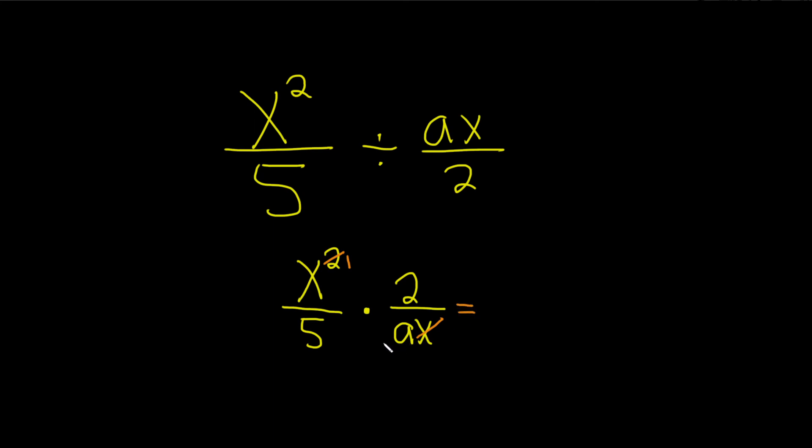This is equal to, so now we multiply straight across. x times 2 is 2x over 5 times a, which is 5a. That's the final answer.